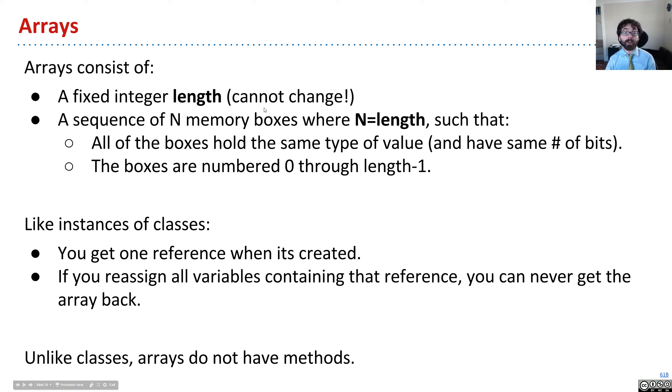We also have a very special rule, which is that all the boxes have to be the same type. That's unlike other languages like Python, where the built-in list type can include different things of different types. In Java, all of those boxes must be the same type and thus the same number of bits. And as an aside, those boxes will always be numbered from 0 to length minus 1.